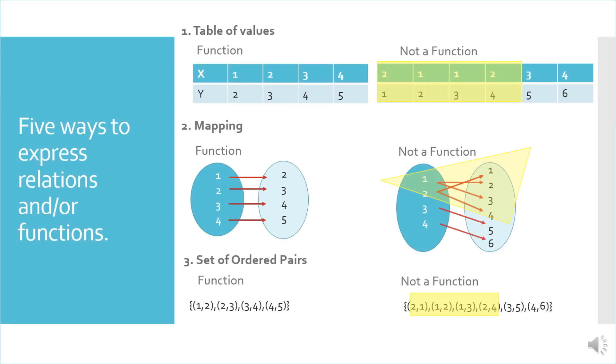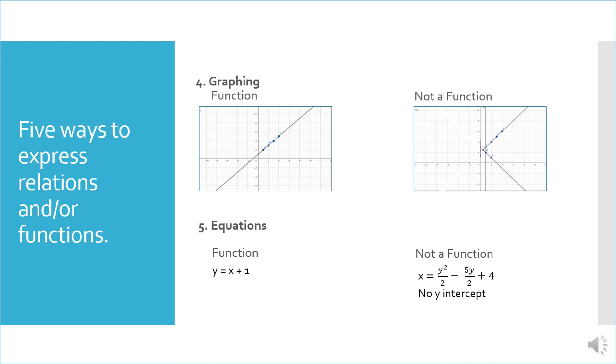So, again, there are five ways to express functions or relations. First, by using table; second, by using mapping diagram; the third one is expressing it as a set of ordered pairs; the fourth one, we can also express it using graphing; and the fifth one is expressing the function or not a function using an equation. Those are the five ways to express relations and or functions.